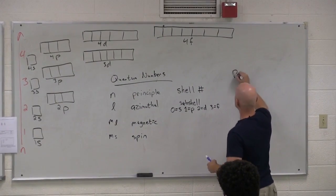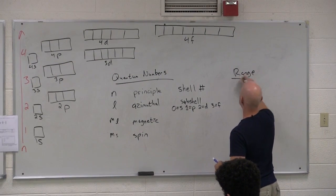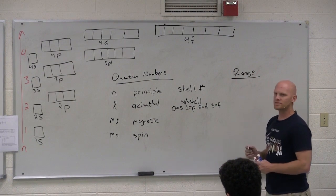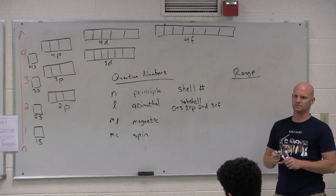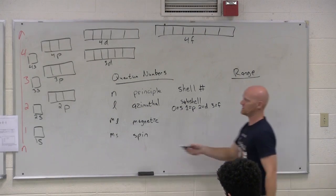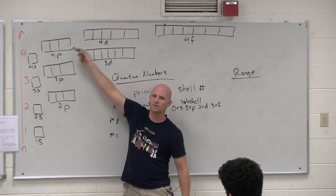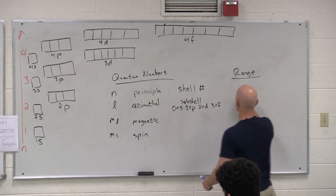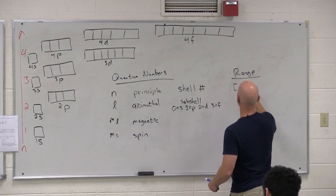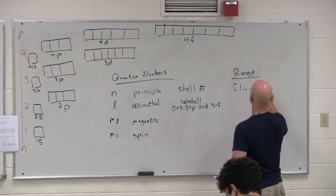If we look at the range of values, and this is the kicker here, that's possible for each of these. What is the lowest value N can have? Yep. First shell. That's the lowest value. How high can it go? Infinity. So its range of values goes from one to infinity. Cool.